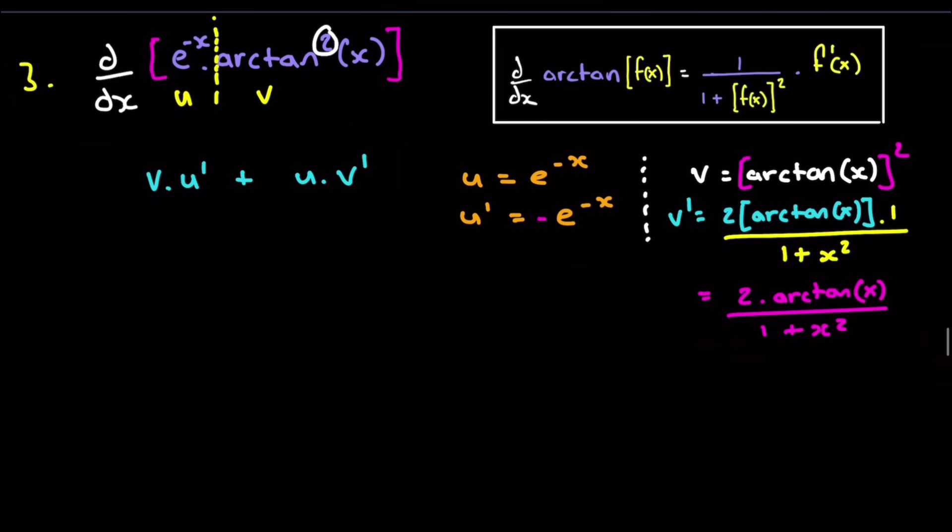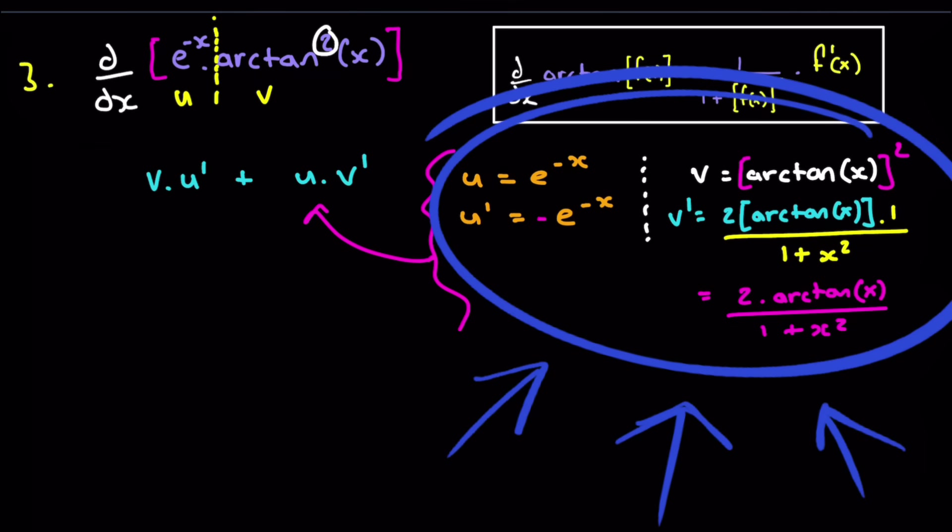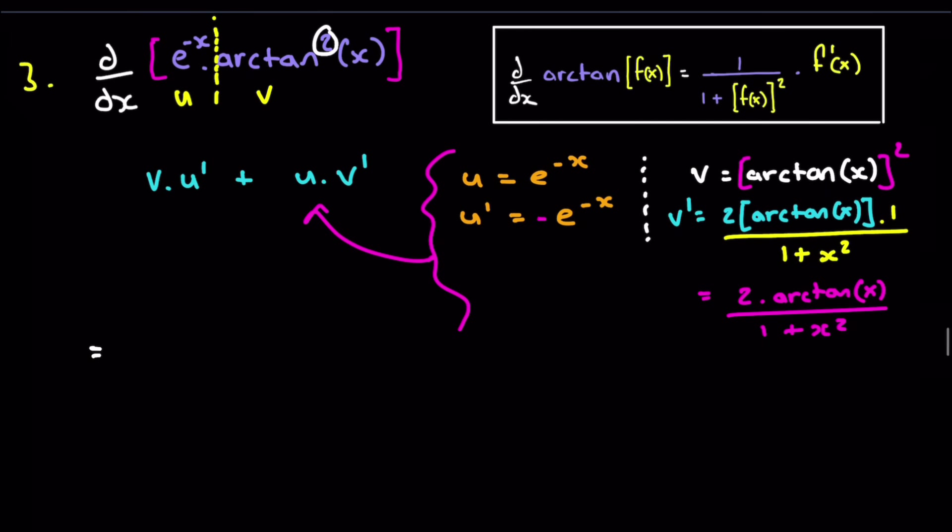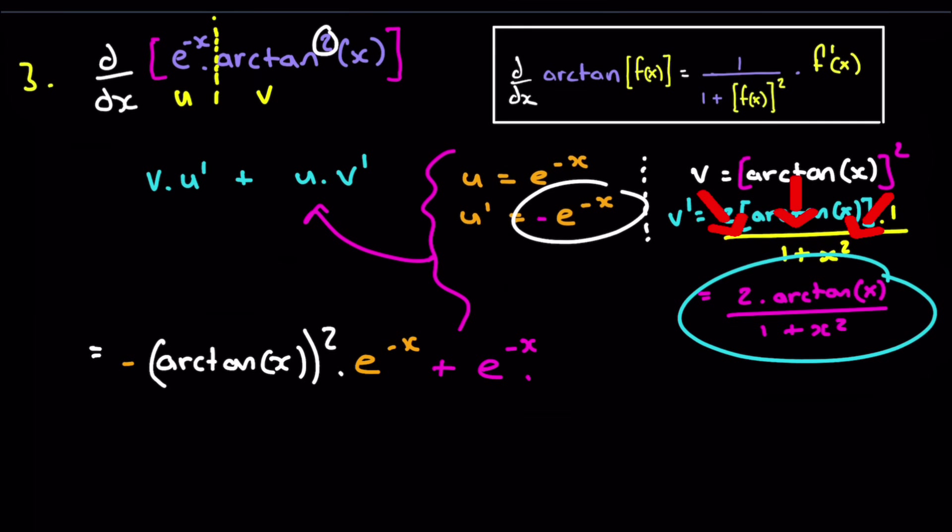So let's put all of this into product rule here. So we're going to get v, now v is arc tan x all squared, du is this here. So that's going to be negative. So let's just put a minus at the front here. And that's e to the minus x plus, u, which is e to the minus x, times by dv, which was that large expression that we found over here. So it was just 2. Let's just get it all in and we can tidy it up in a moment. So arc tan x over 1 plus x squared.